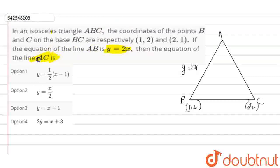The given triangle is an isosceles triangle and points B and C are (1, 2) and (2, 1). I have drawn the diagram where line AB equals line AC as it's an isosceles triangle. Points B and C are (1, 2) and (2, 1), and line AB is y equals 2x. We have to find line AC.